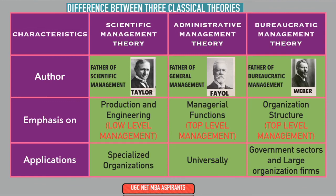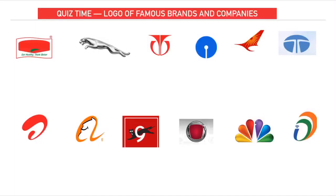These were the main differences between the three classical theories — scientific management theory, administrative management theory, and bureaucratic management theory. Coming to the interesting segment for today: quiz time with logos of famous brands and companies. Keep guessing each logo.